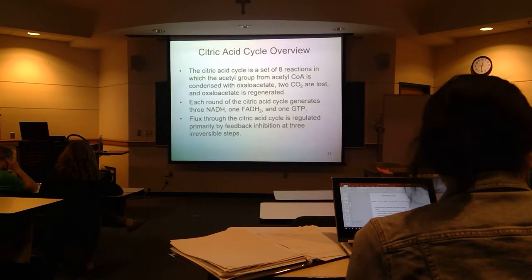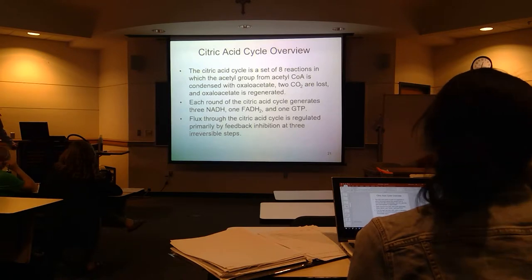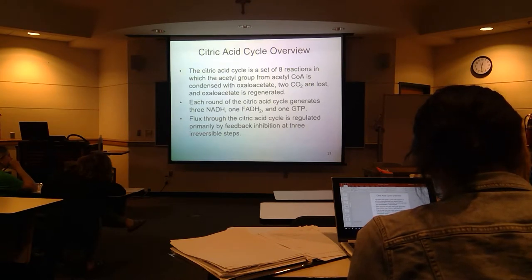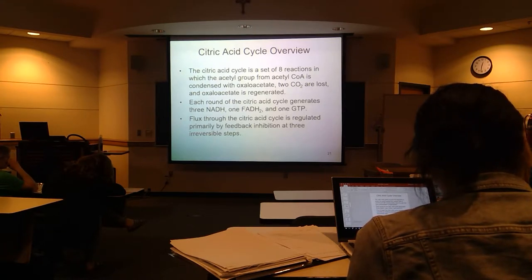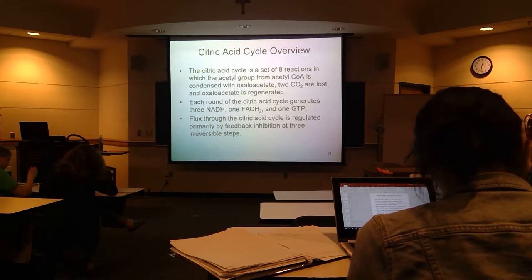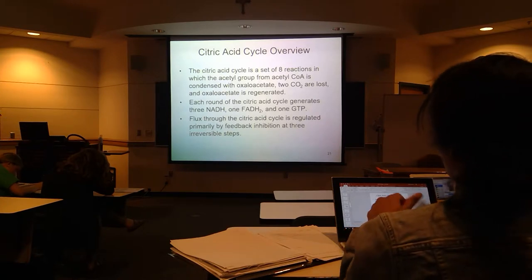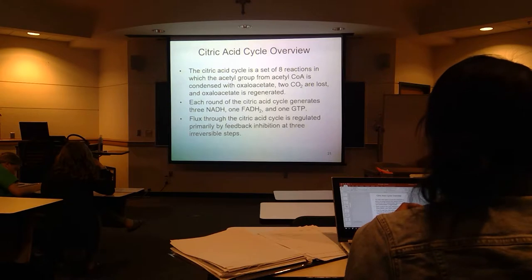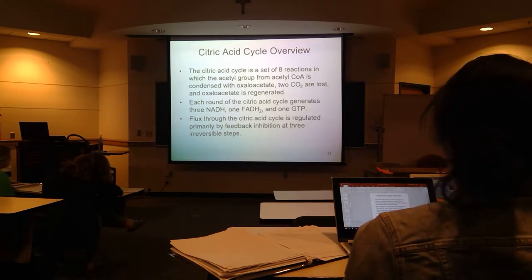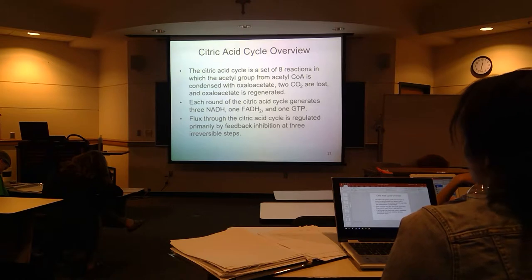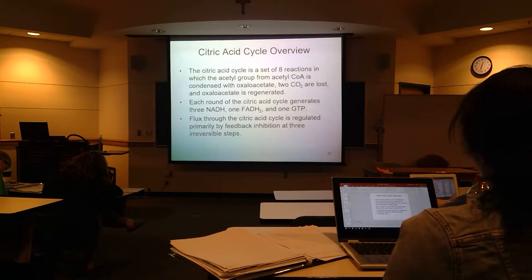So now we can actually get into the citric acid cycle. We're in the mitochondrial matrix — all that E1, E2, and E3 stuff was in the matrix of the mitochondria. Everything was brought in there after glycolysis. Now there are eight different reactions that start with acetyl-CoA and go in a cycle all the way back around. In the process, we're going to do some oxidation, generate some reduced cofactors, and one GTP.